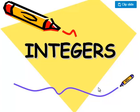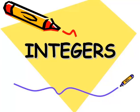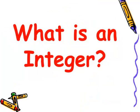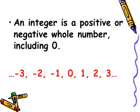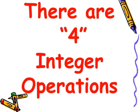Hello everyone, welcome to the math section. The objective of the lesson is integers today, so we will give you the basic concepts of integers. An integer is a positive or negative whole number including zero: minus 3, minus 2, minus 1, 0, 1, 2, 3. We can represent it on the number line as well. There are four integer operations.